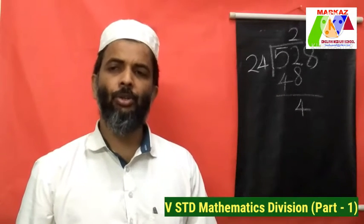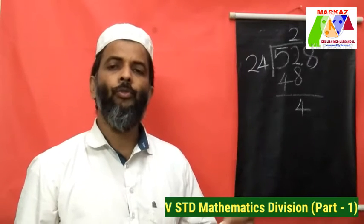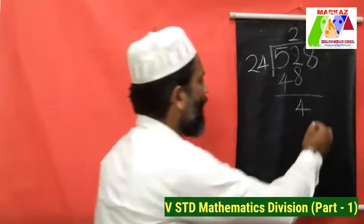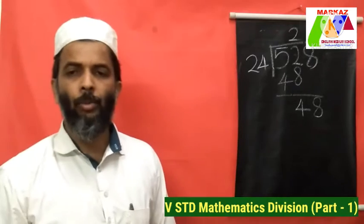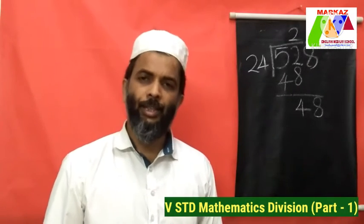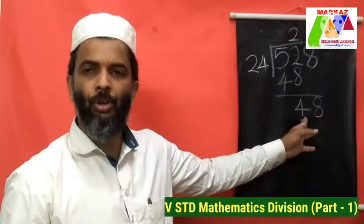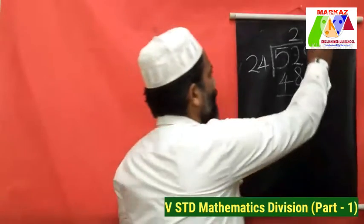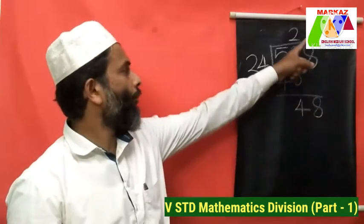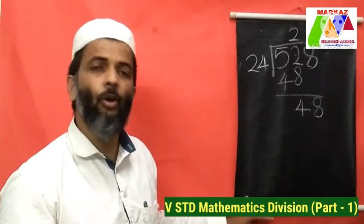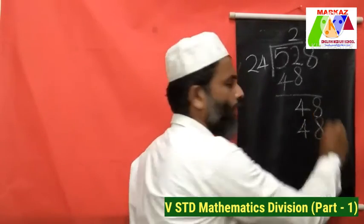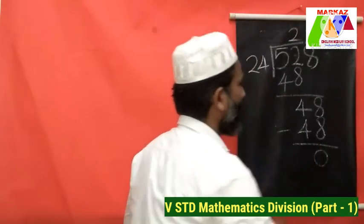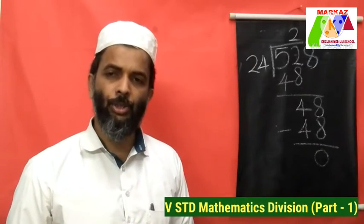We have already dealt with the first 2 digits of the dividend. Now we bring down the last digit to join the remainder and ask how many 24s will make 48. That is easy — it is 2 again. 2 times 24 is 48. Write 2 as a quotient. Then multiply: 2 into 24 is equal to 48. Then subtract: 48 minus 48 is equal to 0. So the answer to this problem is 22.